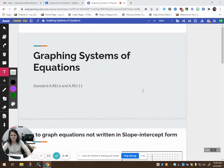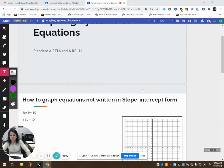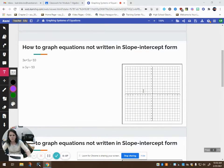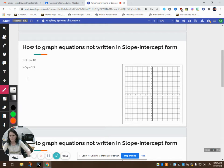Alright guys, we're going to look at graphing systems of equations in a little bit more detail today. So what do we do if we're trying to graph an equation that is not written in slope-intercept form? Well the first thing that I want to do is get them in slope-intercept form, because I know how to graph equations that are written in slope-intercept form.